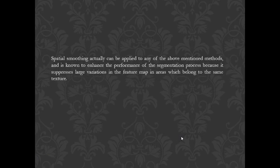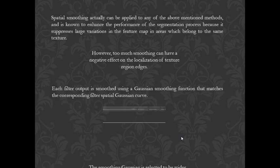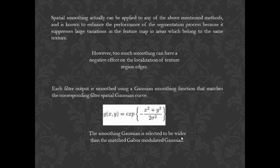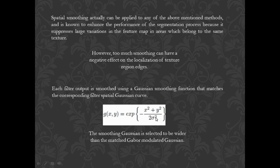Spatial smoothening can be applied to any of the above-mentioned methods, and it is known to enhance the performance of the segmentation process because it suppresses large variations in the feature map in areas which belong to the same texture. However, too much smoothening can have a negative effect on the localization of the texture region edges. So each filter output in this method is smoothened using a Gaussian smoothening function that matches the corresponding filter spatial Gaussian curve, where sigma denotes the standard deviation. This smoothening function is selected to be wider than the matched Gabor filter Gaussians.